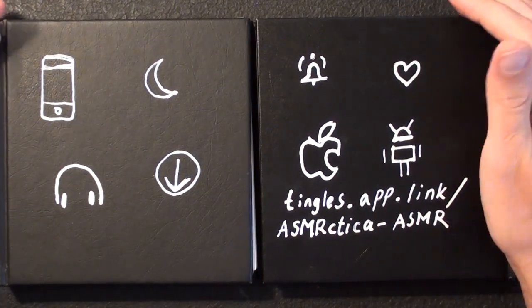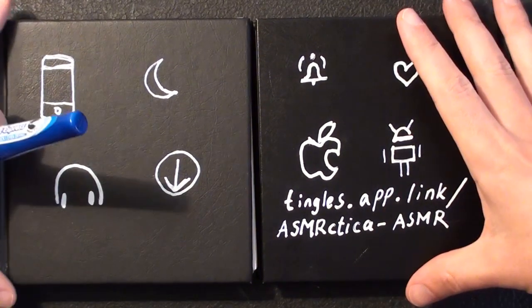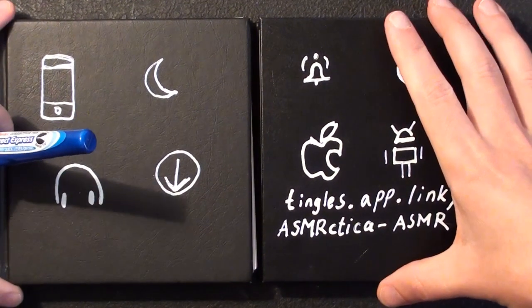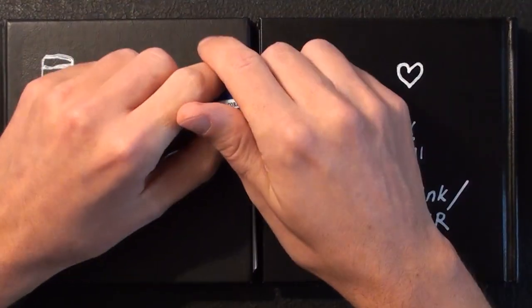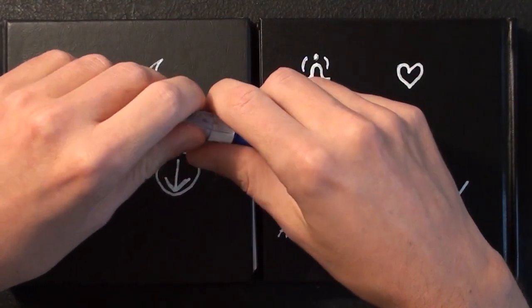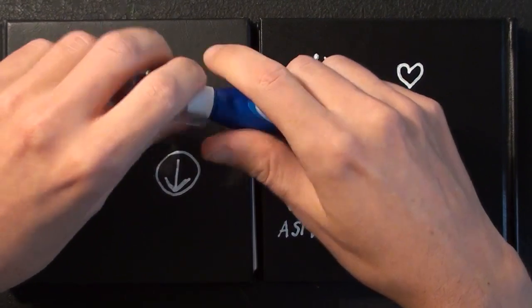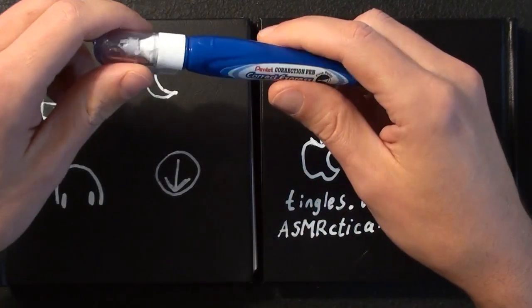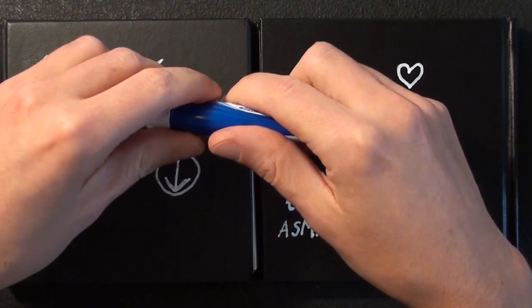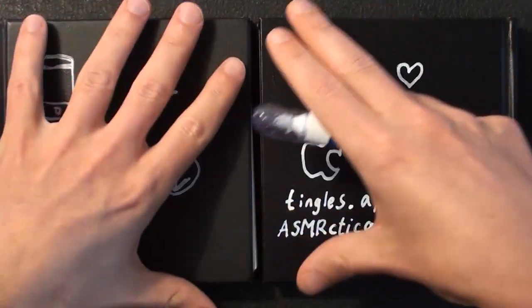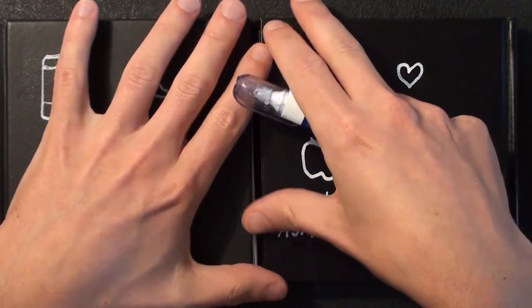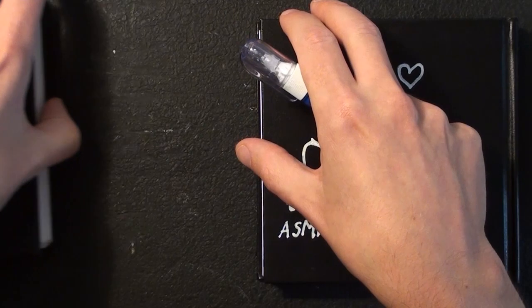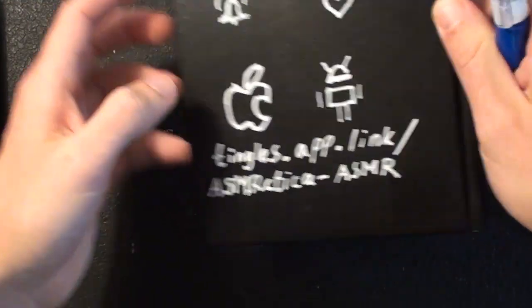So I guess there are some nice features. Also there's like a library where you can search and look for specific categories of ASMR videos. And I haven't found a map category yet, but hopefully that's something that could be added in the future because I think that would be nice.